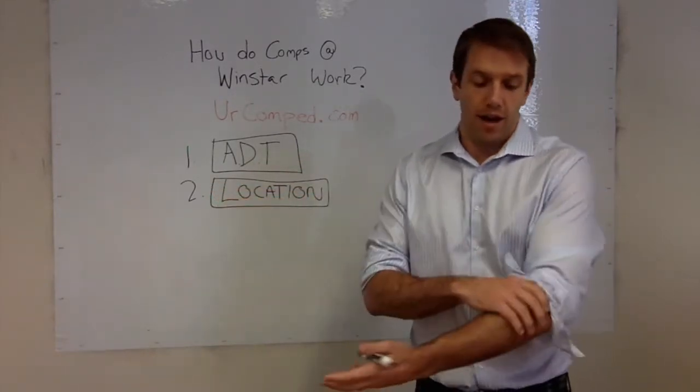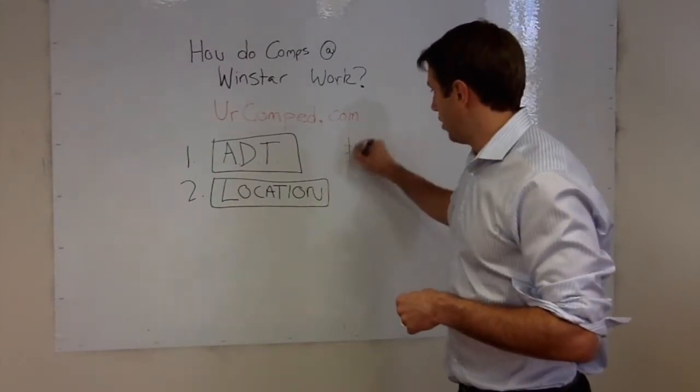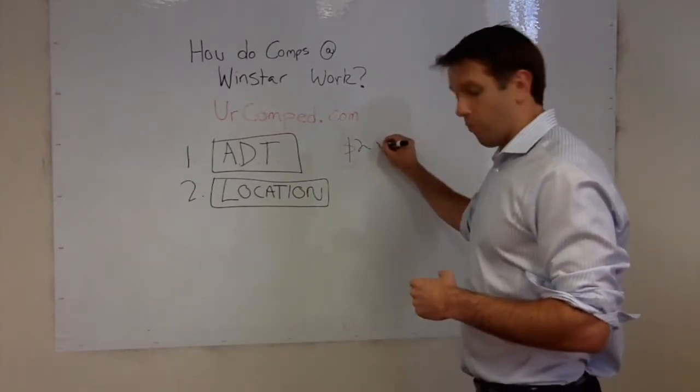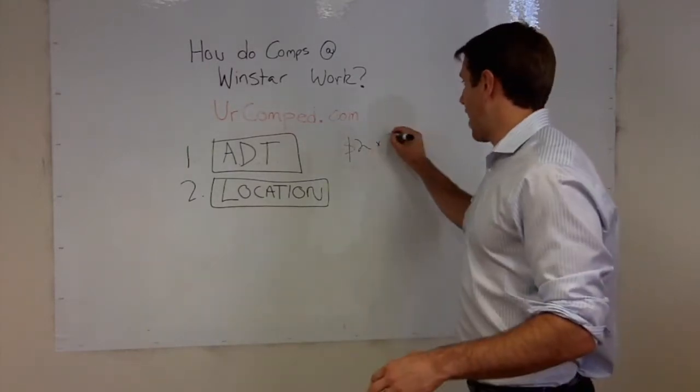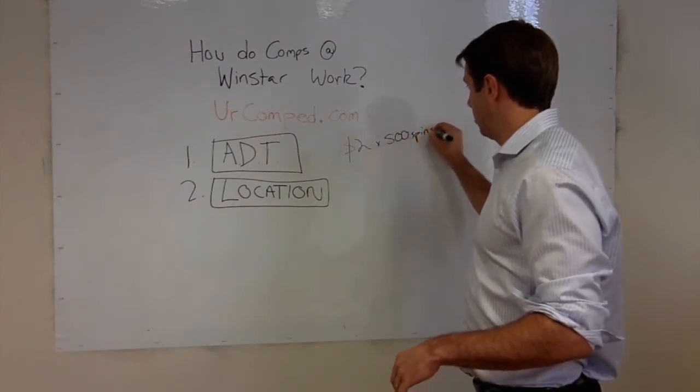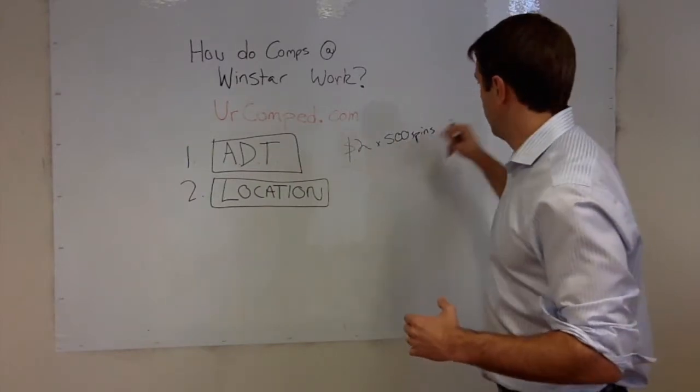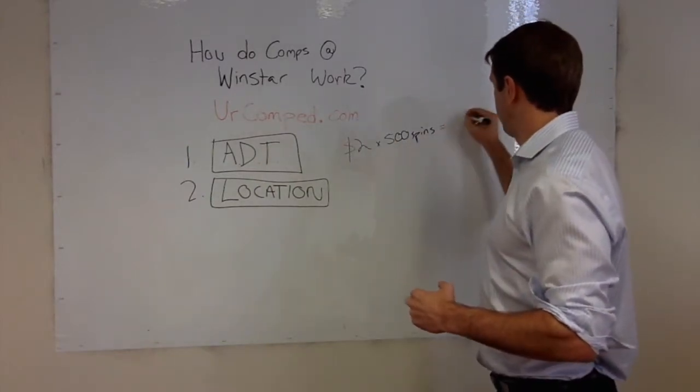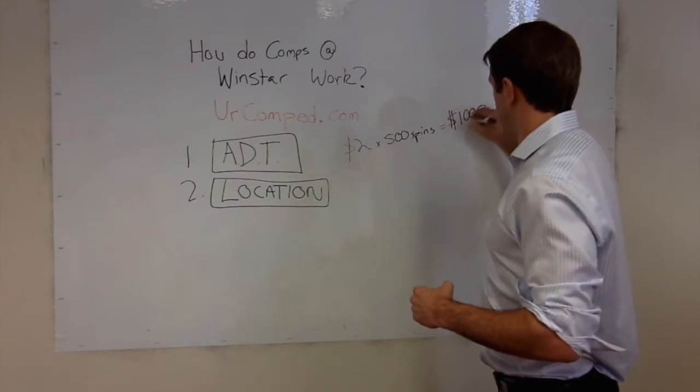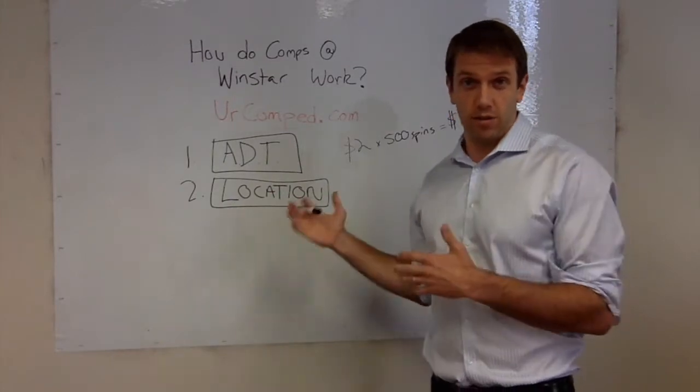So let's take an example of a slot machine. Let's say you're doing $2 per spin on a slot machine, roughly 500 spins per hour, which is pretty standard. 500 spins per hour, that means you are putting through $1,000 per hour. We call that coin in, $1,000 coin in.